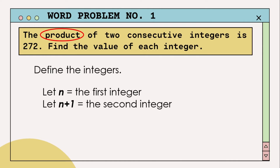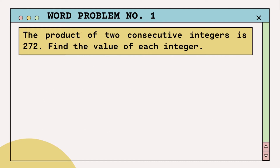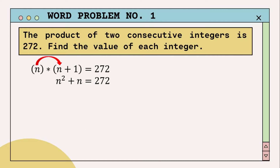The word 'product' here means to multiply, so we need to multiply the two integers together. The first integer, which is n, multiplied by the second integer, which is n plus one, equals 272. Now we multiply everything out: n times n is equal to n squared, and n times one is equal to n, so the equation becomes n squared plus n equals 272.